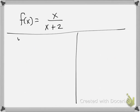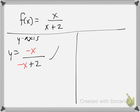Let's try one more example. I'll start with y-axis symmetry, which means negating my x's. Do the negatives cancel? No, they don't. So this is clearly not what we started with — we don't have y-axis symmetry.